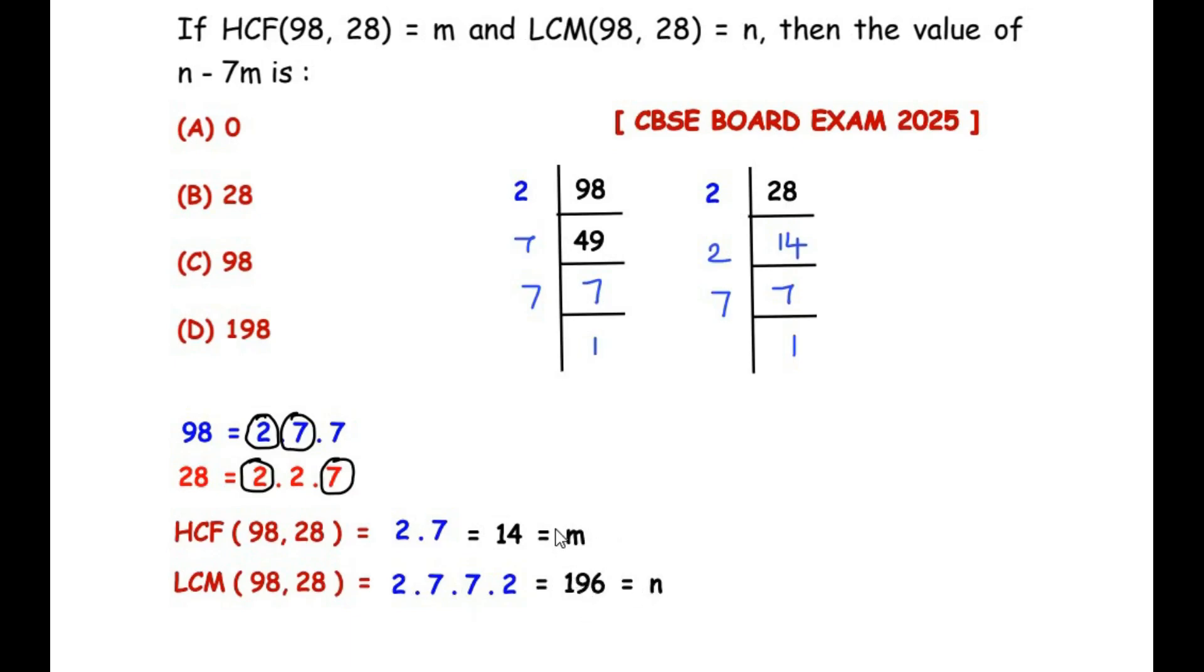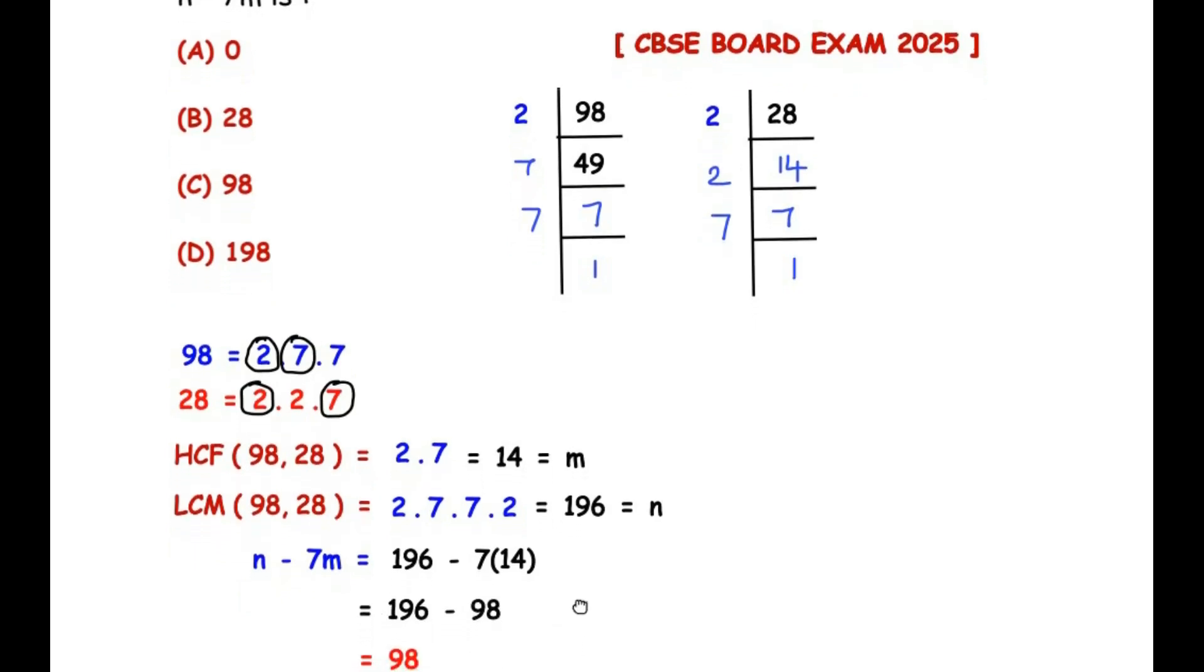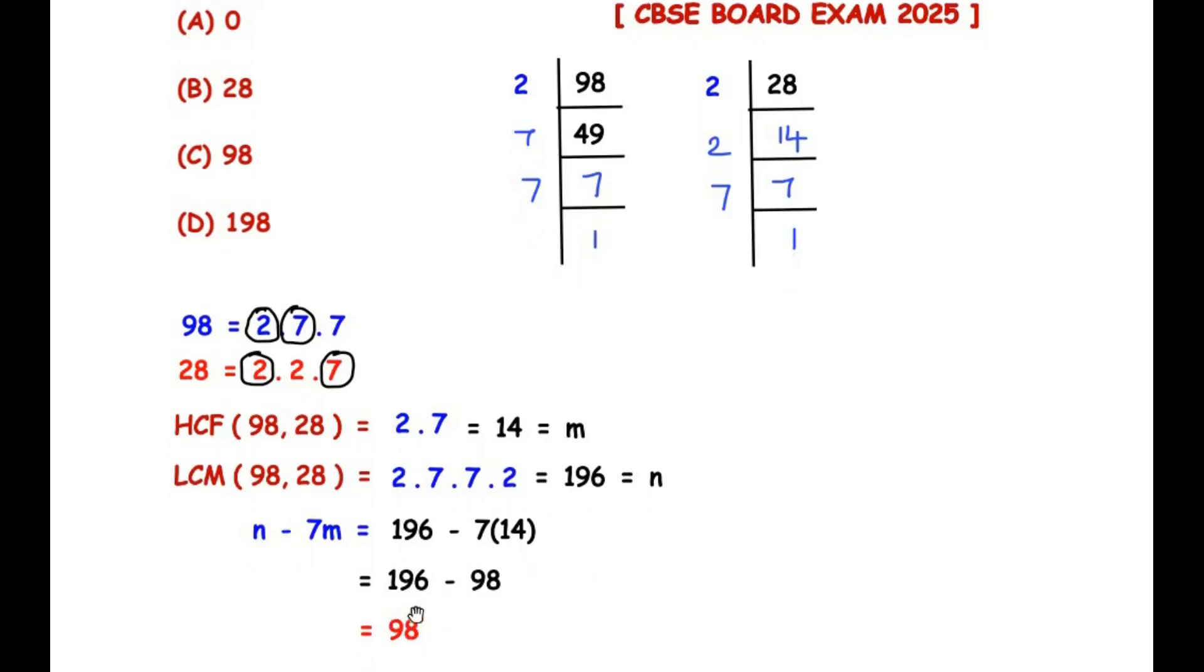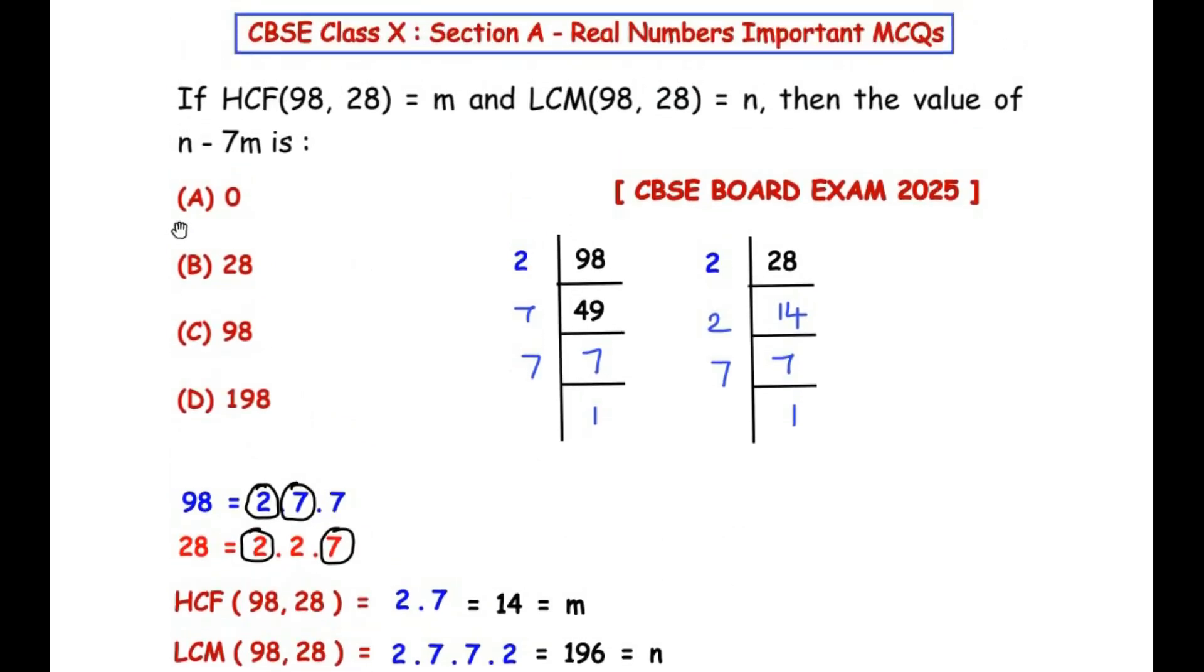Now we have the value of m and the value of n. Let's focus on the given expression: n minus 7m. So we have n minus 7m, which is 196 minus 7 times 14. Simplifying this, we get 196 minus 98, which gives us 98. So the value of n minus 7m is option C, that is 98.